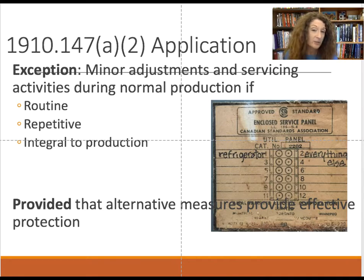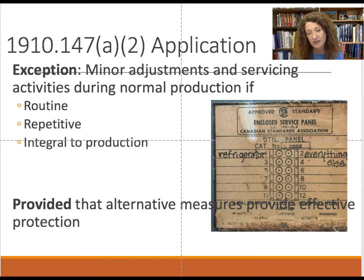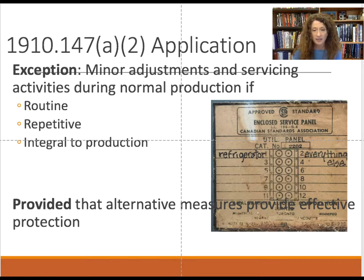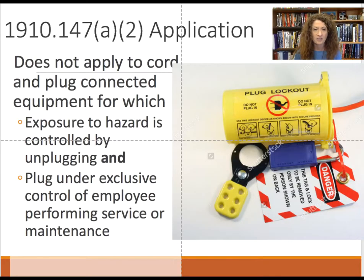Here is an example of a panel that is poorly labeled — people wouldn't know what to lock out or tag out. That's part of electrical safety but also applies to lockout-tagout because people need to know what turns a machine off and how to lock it out and tag it out appropriately.